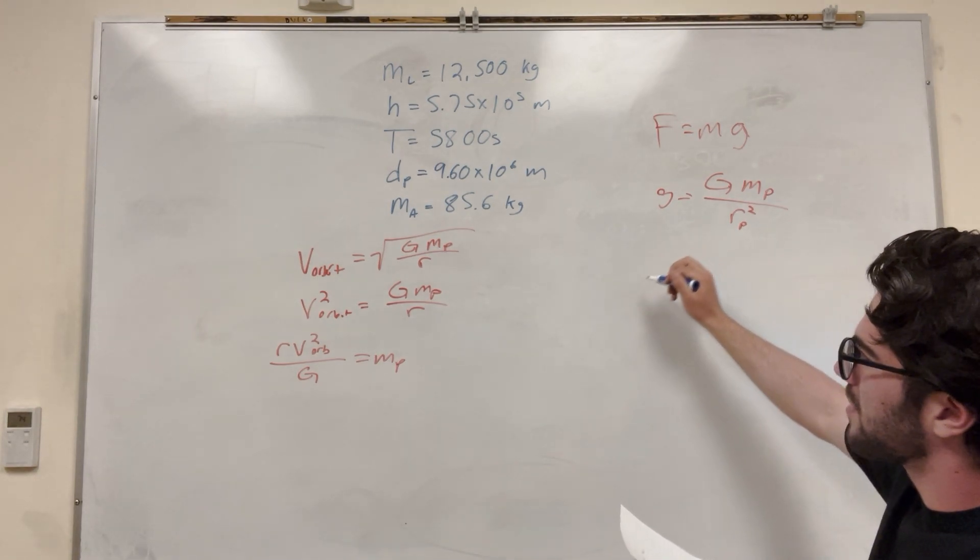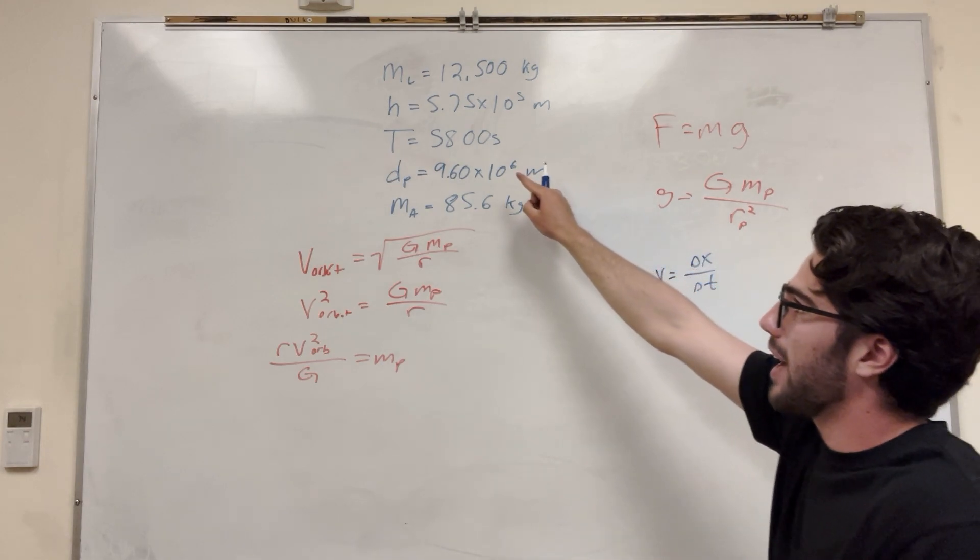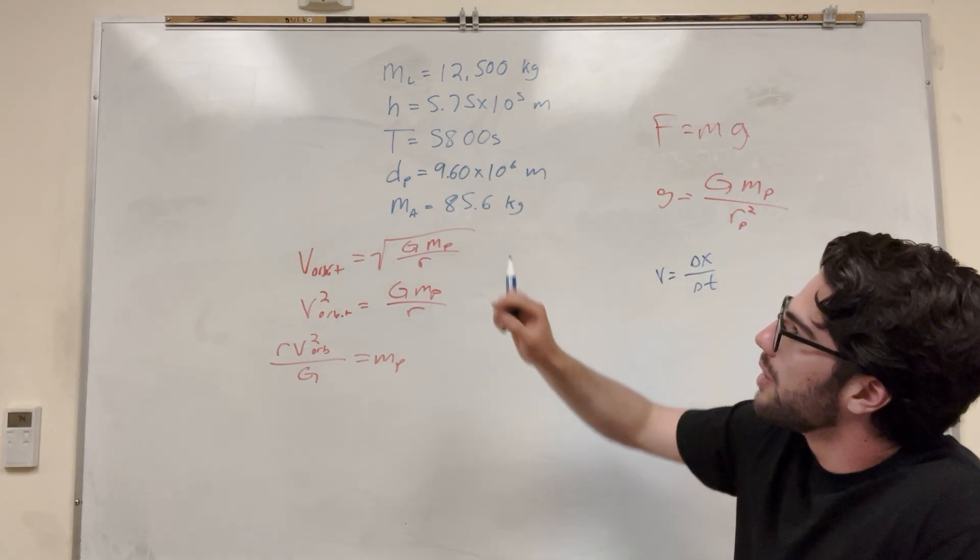So now we need to find the velocity of the orbit. Velocity of orbit is also something we can figure out, but it's gonna take some more work. Basically doing this problem feels like you're getting sidetracked over and over because you need this equation, then this equation. To find our velocity we always know that velocity is equal to the change in position over change in time. How are we gonna do this? Well, we have a period and it takes us five thousand eight hundred seconds to orbit the planet. Basically we're trying to find the circumference.